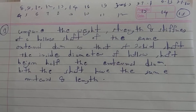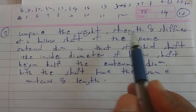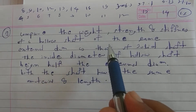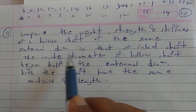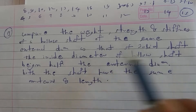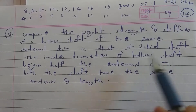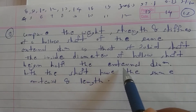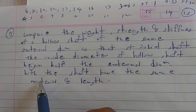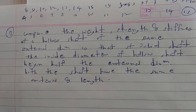The next problem on the shaft is: compare the weight, strength, and stiffness of a hollow shaft of the same external diameter as that of the solid shaft. The inside diameter of the hollow shaft is half the external diameter. Both shafts have the same material and length.